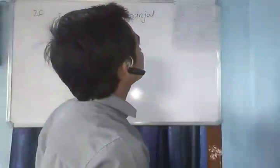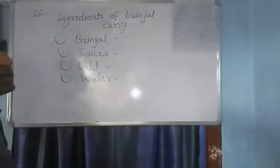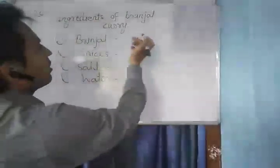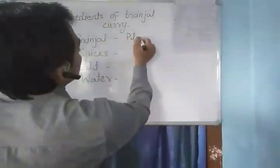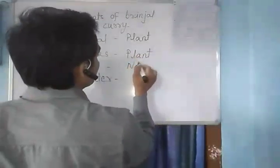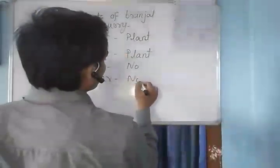The next part of question 20 asks to name which ingredients come from plants and which do not. Brinjal comes from plants. Spices also come from plants. Salt does not come from plants. Water does not come from plants.